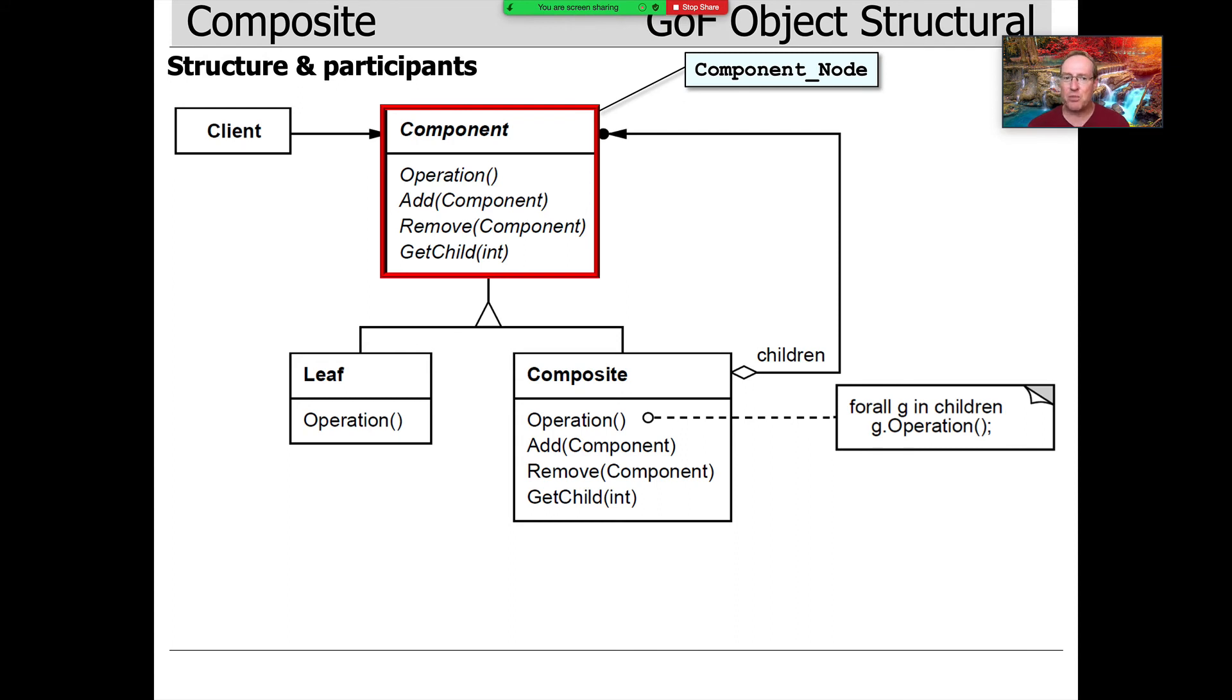The component part is played by component node, which we've taken a little peek at. We saw it has these operations like item, left, right, and accept. You'll notice that I didn't change the names here—I'm keeping the names from the Gang of Four book.